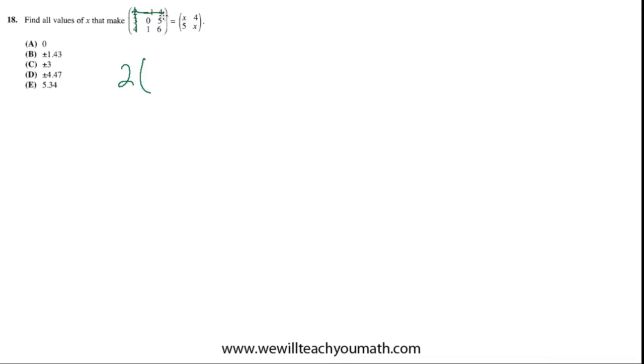And then you treat what's left as a 2x2 determinant. So we do this diagonal, 0 times 6 is 0, minus this diagonal, 5 times 1 is 5. Then you do negative of the next term in the middle of the top row. So it's negative, negative 1. So that becomes positive 1.